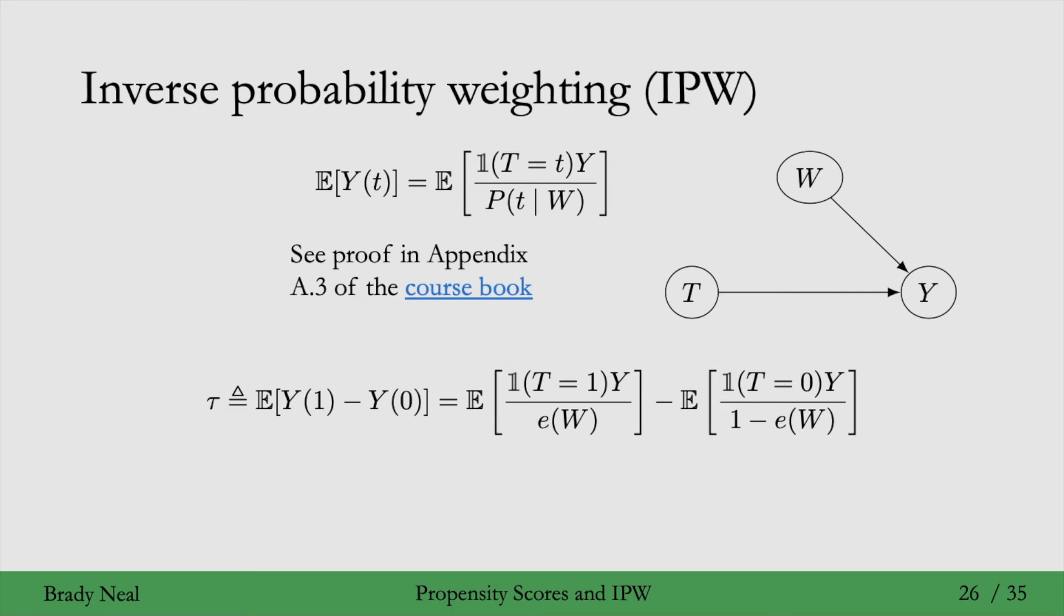Then, we can turn the statistical estimate into an estimator using what you might expect. We model the propensity score using e-hat here, and then we approximate this expectation where we're only pulling out the treatment equals 1 data using this sum and dividing by 1 over the number of treatment samples. Similarly, we do the same for this expectation when we're selecting out the T equals 0 samples. That's our basic IPW estimator.